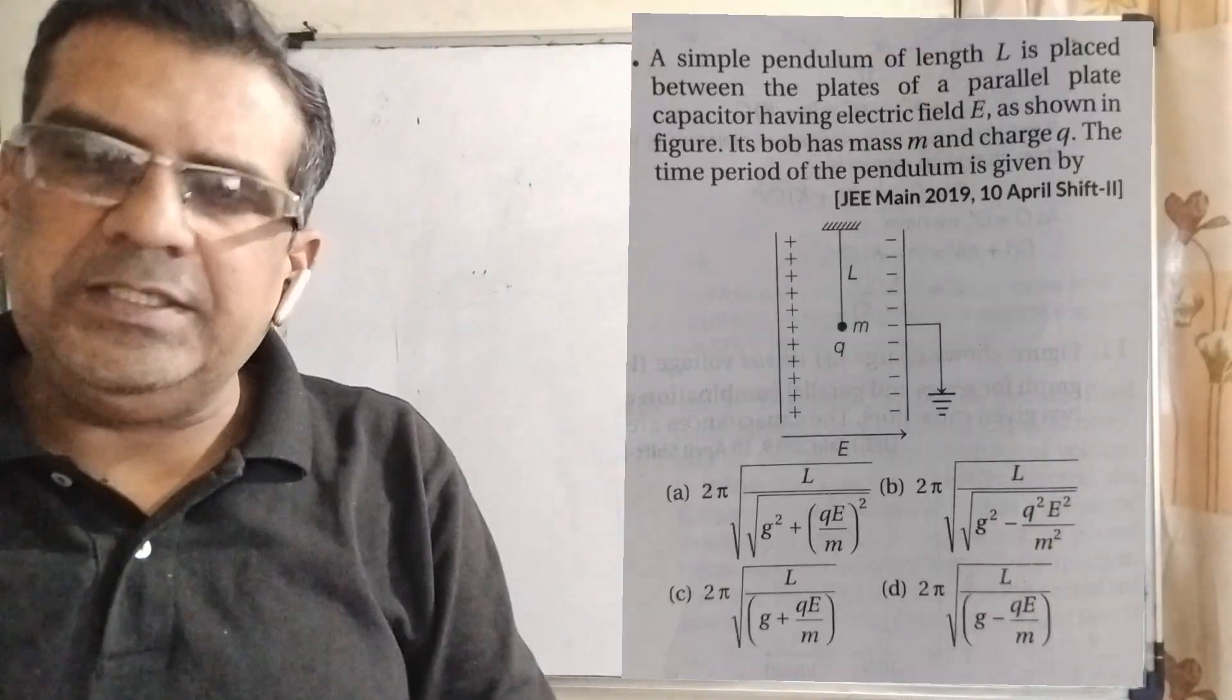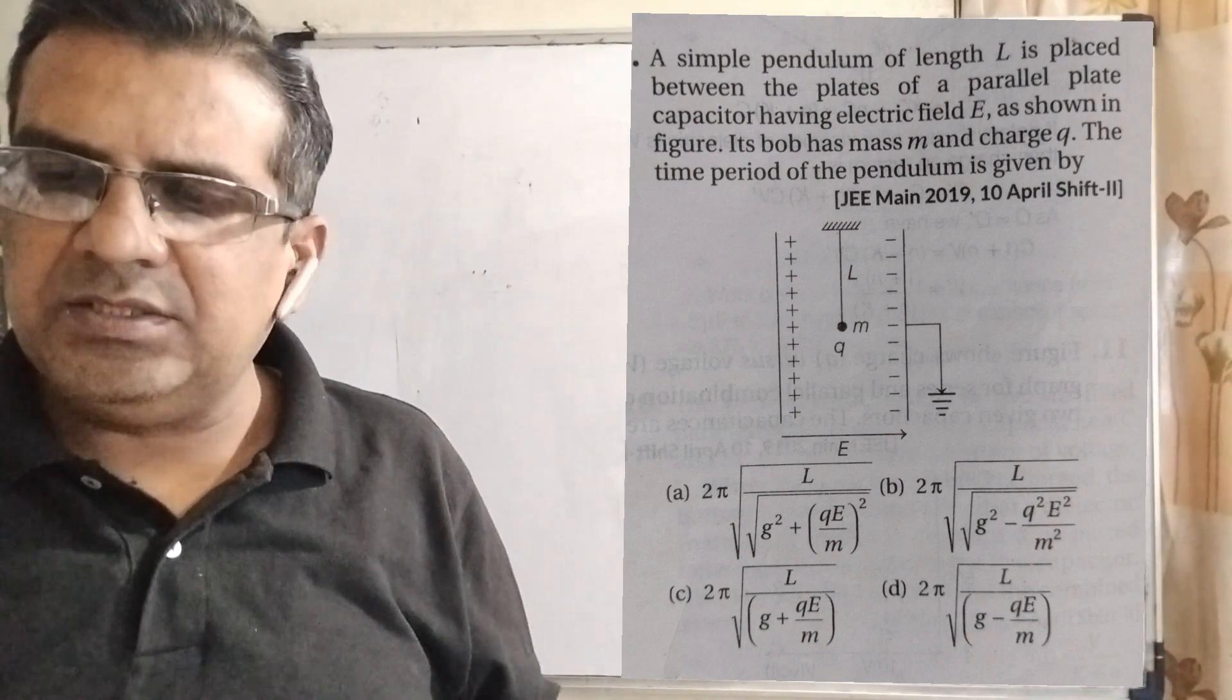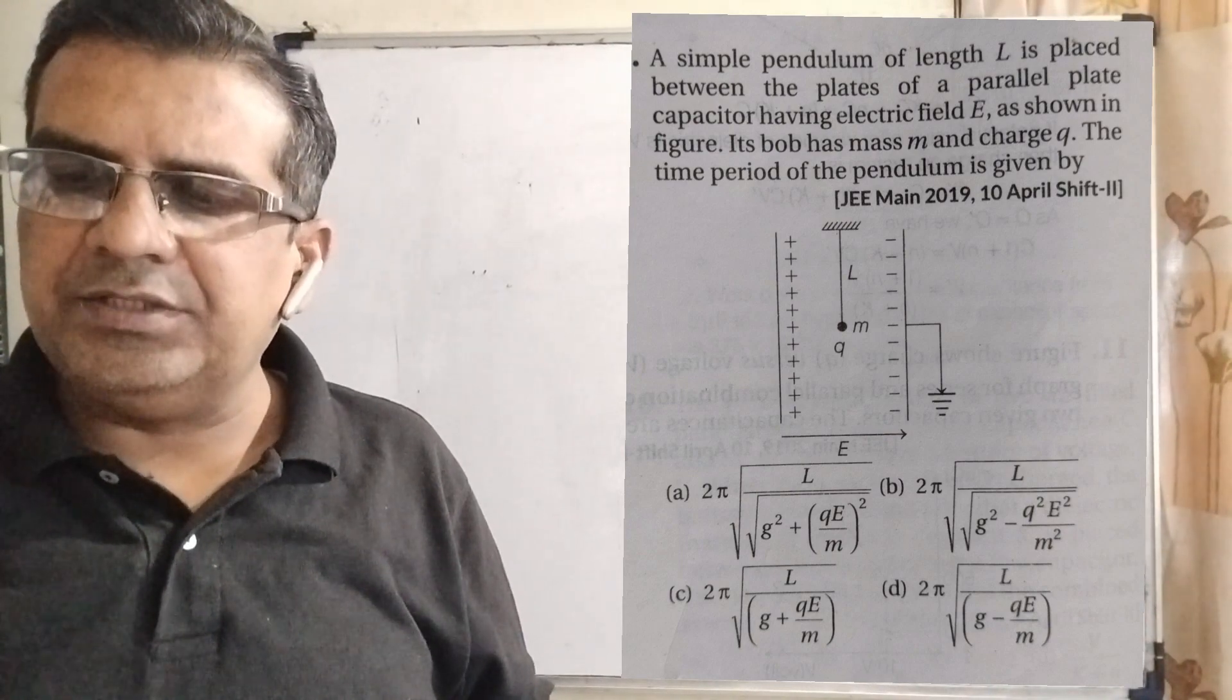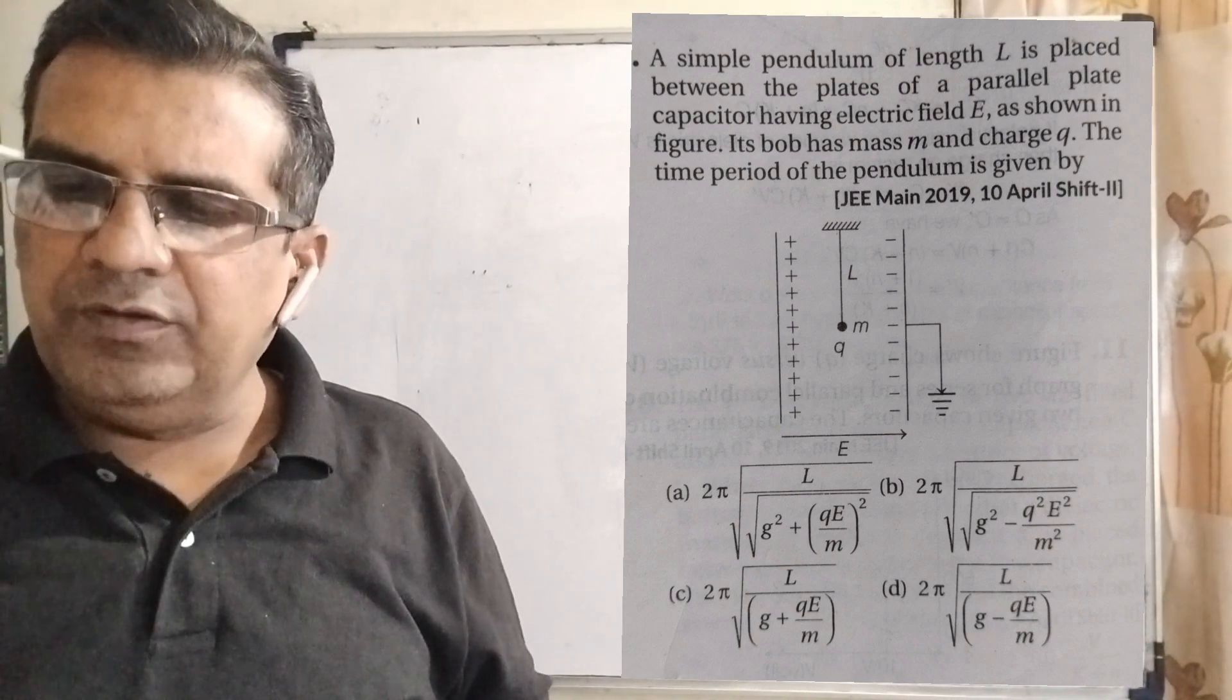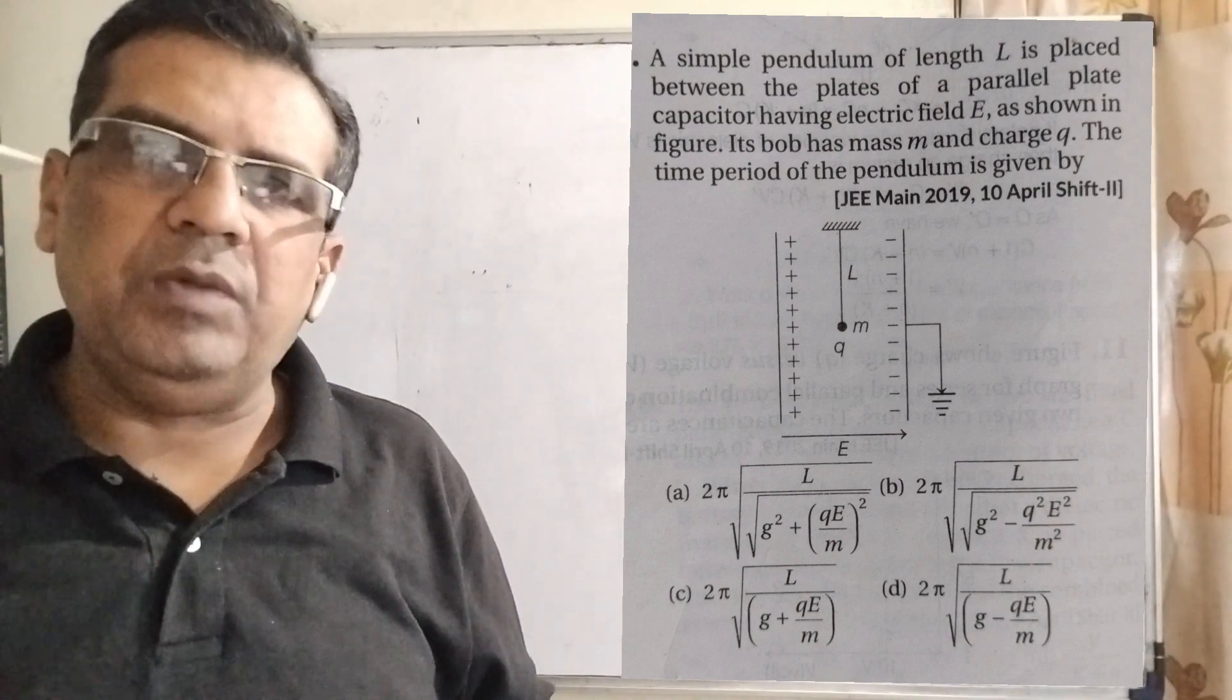Let's see what the question says. A simple pendulum of length capital L is placed between the plates of a parallel plate capacitor having electric field E. According to the figure, its bob has mass small m and charge small q.